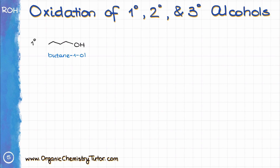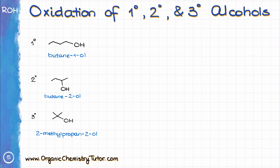The oxidation of alcohols produces different products depending on the nature of the starting material. We can classify alcohols as primary, secondary, or tertiary, based on how many other carbons are connected to the carbon bearing the OH group. For example: butane-1-ol is a primary alcohol, butane-2-ol is a secondary alcohol, and 2-methylpropane-2-ol is a tertiary alcohol.